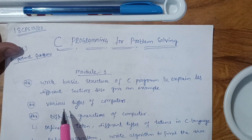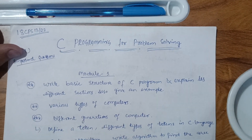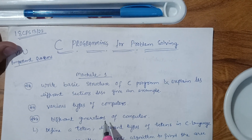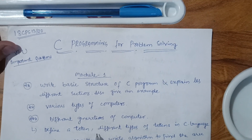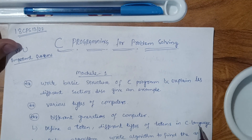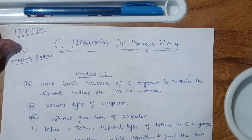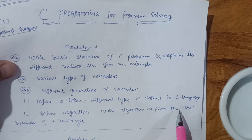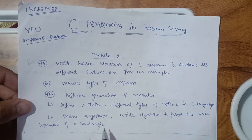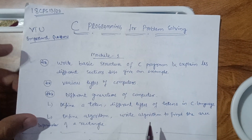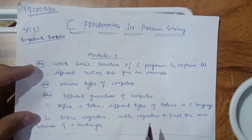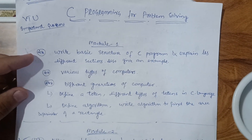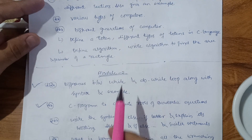So just focus on the theory part in Module 1. Don't go into various types of computers and history. Focus on: different generations of computers, define a token and different types of tokens in C language, define algorithm, and write an algorithm to find the area and perimeter of a rectangle. This much theory content is enough for Module 1 to score 10 to 20 marks.